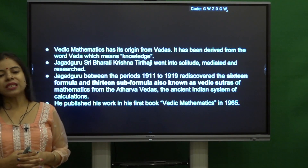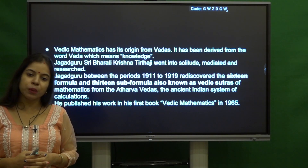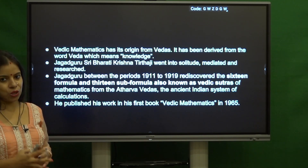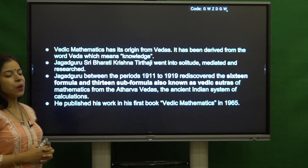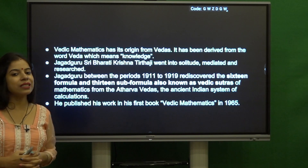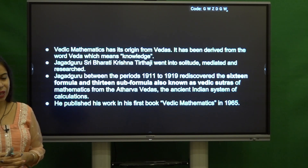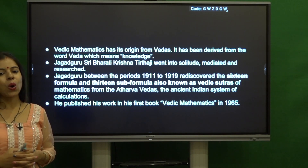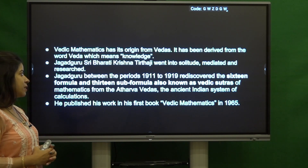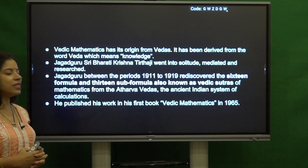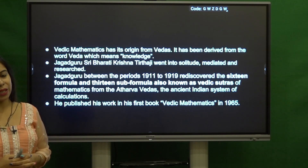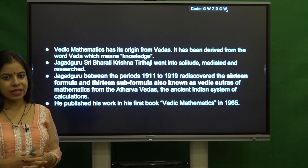Vedic Mathematics has its origin from the Vedas. The word Vedic has been derived from the word Veda which means knowledge. Krishna Tirthaji went into solitude, meditated and researched, and rediscovered the 16 formulas called Sutras and 13 sub-formulas called Sub-Sutras, known as Vedic Sutras or Ganit Sutras from the Atharva Veda — the ancient Indian system of mathematics and calculations. He published his work in his book Vedic Mathematics in 1965.